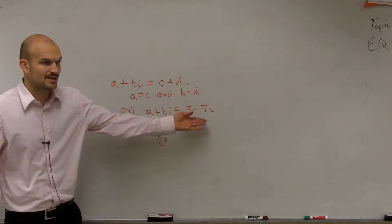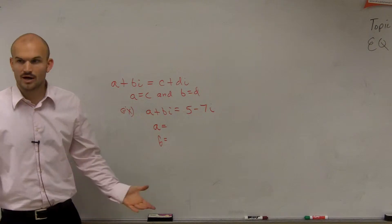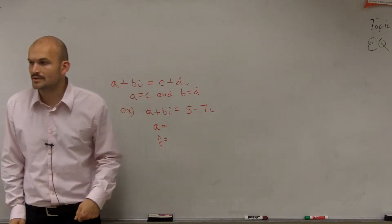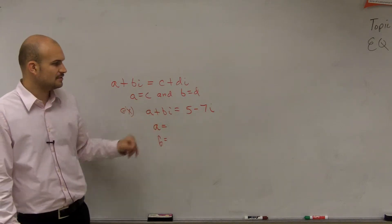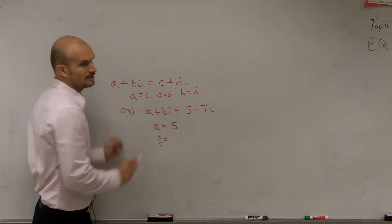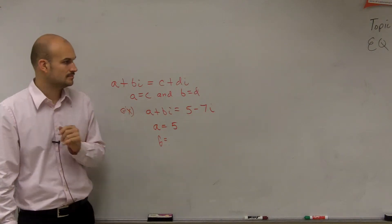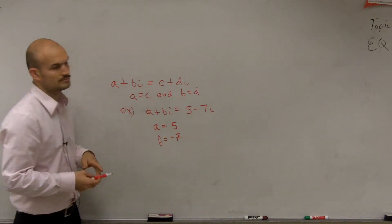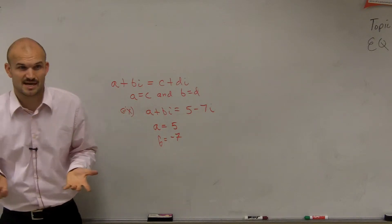Here's this complex number — what are the values? Well, by using our equality of complex numbers, a is equal to 5. And then b is equal to negative 7. You guys see how that works? Pretty basic in that example.